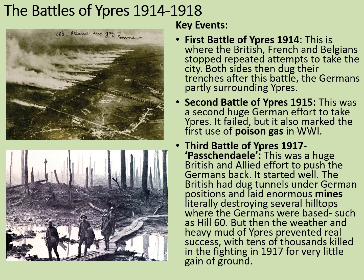Then we have the Third Battle of Ypres, better known as Passchendaele, which occurred in 1917. This was a huge British and allied effort to push the Germans back. It started well — the British had dug tunnels under German positions and laid enormous mines, literally destroying several hilltops where the Germans were based, such as at Hill 60. But then the weather and the heavy mud of Ypres prevented real success, with tens of thousands killed in the fighting. In 1917, very little ground was actually gained.